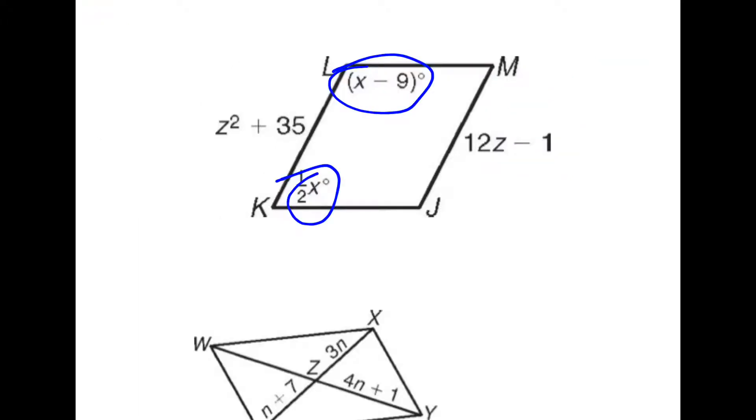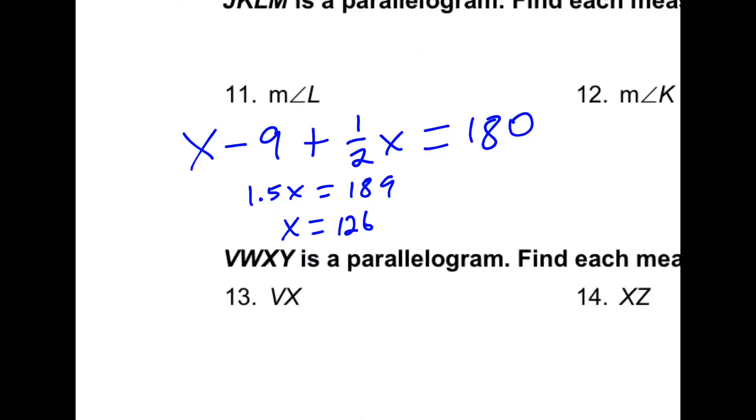In number 11, to figure out angle L, we're going to take L and K and add them together and set it equal to 180. So when we combine those, we get 1.5x equals 189, or x is equal to 126.